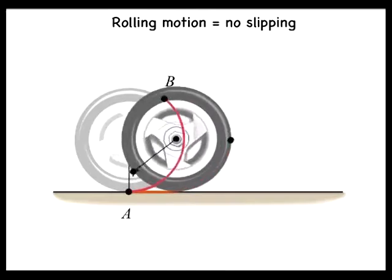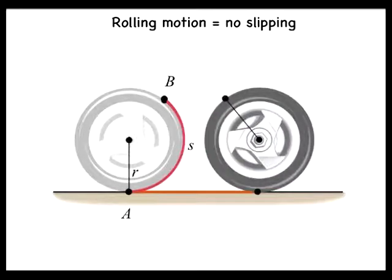The tire then rotates without slipping until point b makes contact with the road. It is clear that the distance d the center of the tire or the axle moves is the distance ab, which is the same as the distance s. Therefore d equals s.